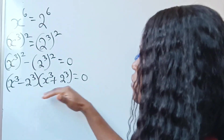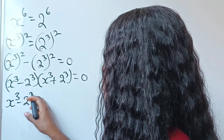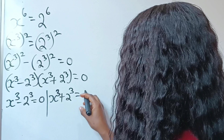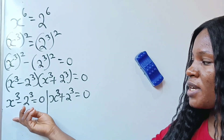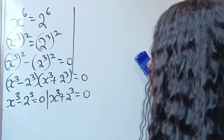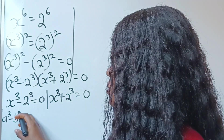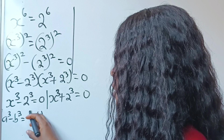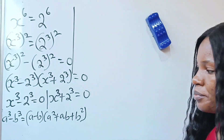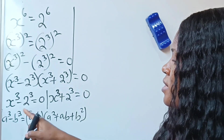That simply means we have two parts to this equation: x to the power of 3 minus 2 to the power of 3 equals 0 (Case 1), and x to the power of 3 plus 2 to the power of 3 equals 0 (Case 2). We are going to treat the first case. Let's start. We need to remember the algebra identity: a to the power of 3 minus b to the power of 3 equals a minus b, multiplied by a squared plus ab plus b squared. Our a is x and our b is 2.